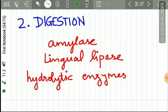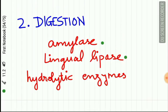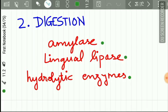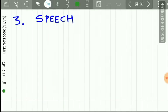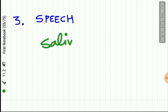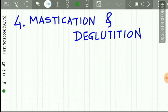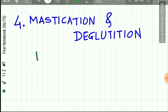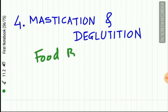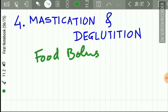The second function is digestion — enzymes like amylase, lingual lipase, and hydrolytic enzymes help in food digestion. Third is speech — saliva keeps the oral cavity moist, aiding proper speech. Fourth is mastication and deglutition — saliva helps form food into a bolus that is easily swallowed.